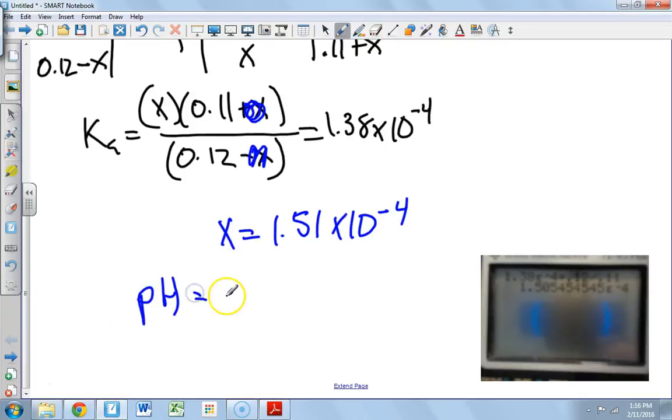That's our x value, and so now we want the pH. And that equals the negative log of the hydronium ion concentration, which in this case is this value. So we do the negative log of that, and so we get that the pH equals 3.82.